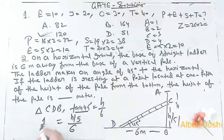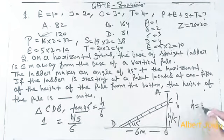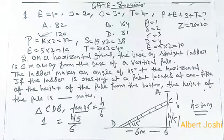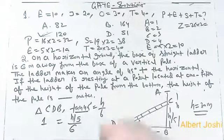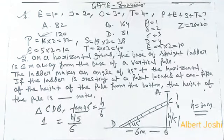Tan 45 is equal to 1, so h upon 5 equals 6. Therefore h equals 30. So the answer is 30 meters. If you practice like this, you will qualify the exam. You have to solve a lot of questions daily. Thank you so much.